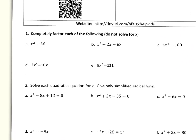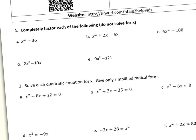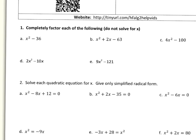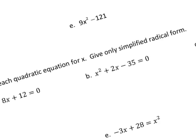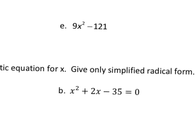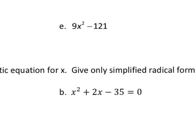Looking at this review, I want to completely factor the questions in number one. Most have two terms; the only one with three terms is B. Looking at E, I see two terms. First thing I think about is GCF — is there a greatest common factor? The answer is no; nothing comes out of 9 and 121. Next I check: are either of these terms perfect squares? They both are. What times itself makes 9x²? That would be 3x. What times itself makes 121? That would be 11.